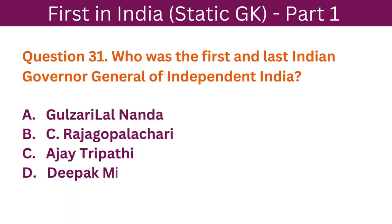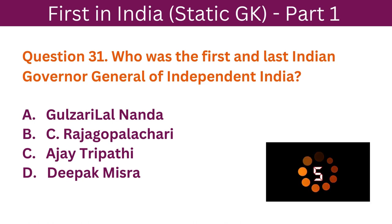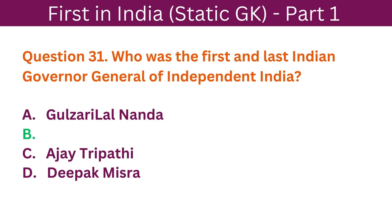Question 31: Who was the first and last Indian Governor General of Independent India? A. Gulzarilal Nanda. B. C. Rajagopalachari. C. Ajay Tripathi. D. Deepak Misra. The correct answer is B. C. Rajagopalachari.